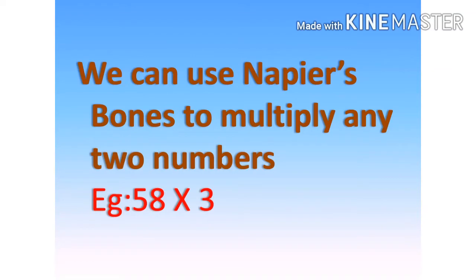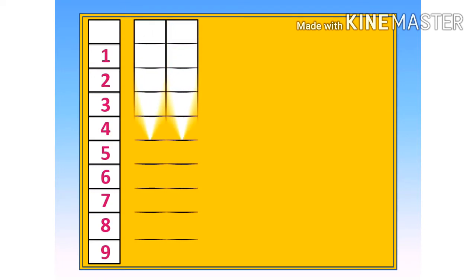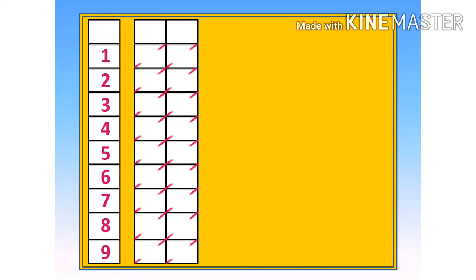Let's see how the Napier's bone works. We can use Napier's bone to multiply any two numbers. Example: 58 multiplied by 3. Place the rows of 5 and 8 side by side on the board.